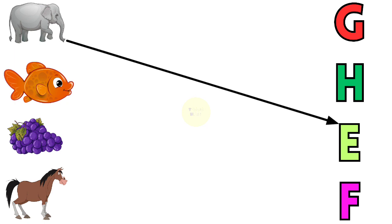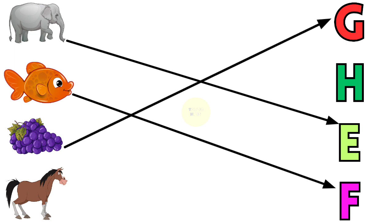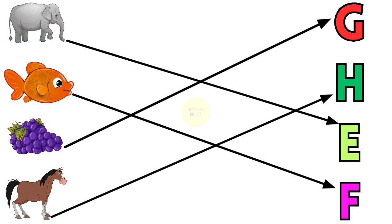E for Elephant, F for Fish, G for Grapes, H for Horse.